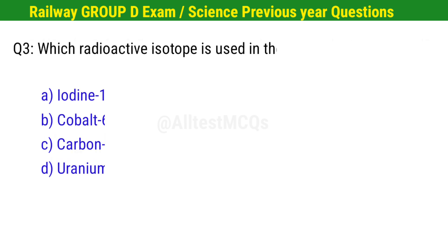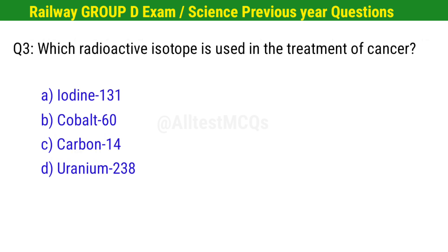Question No. 3. Which radioactive isotope is used in the treatment of cancer? Right option is B. Cobalt-60.